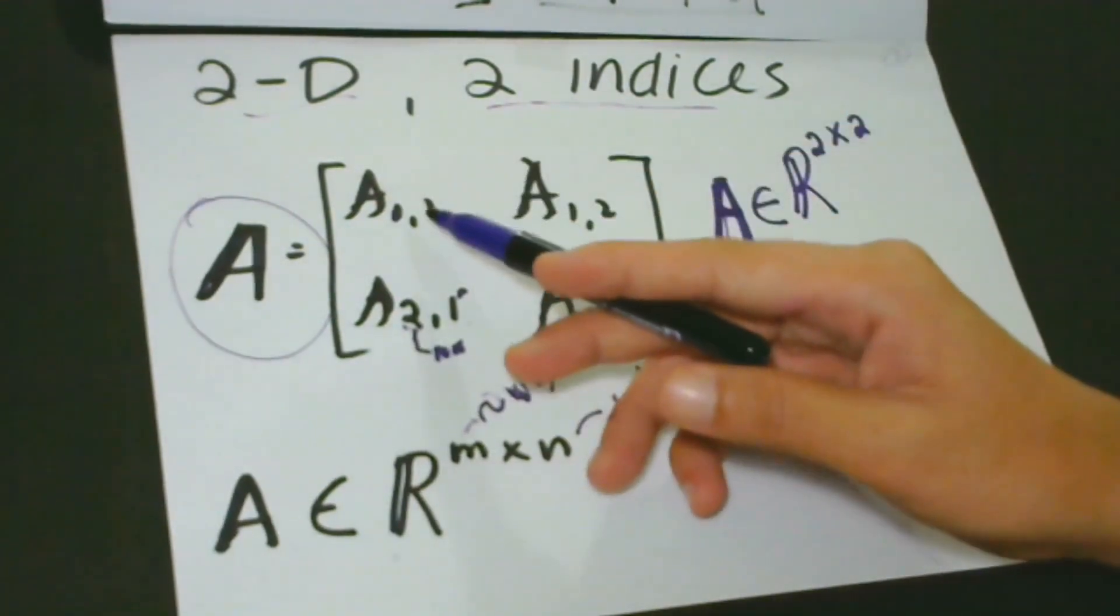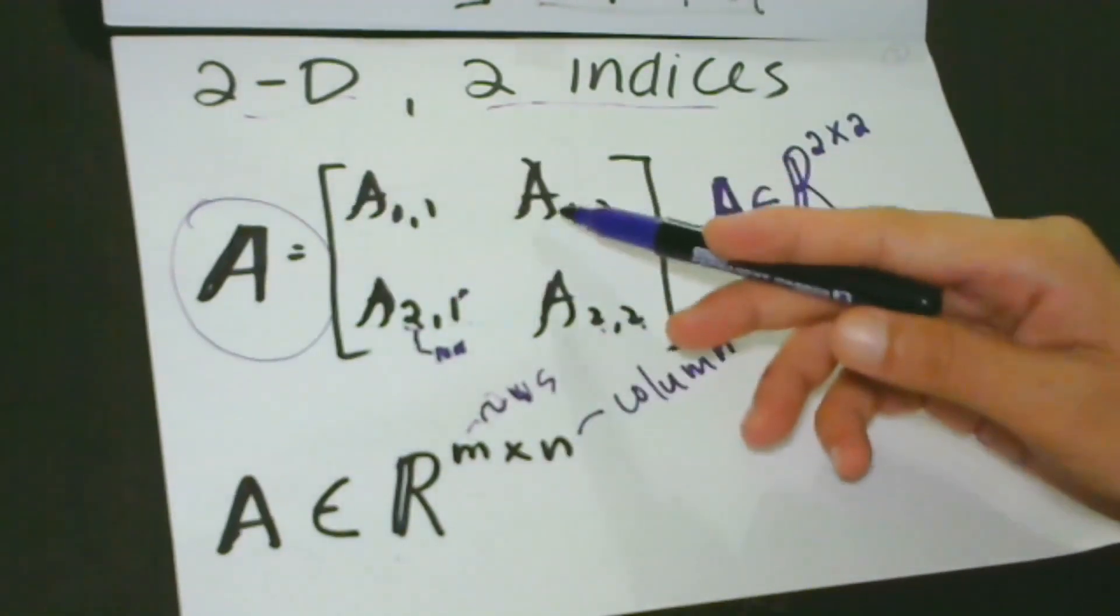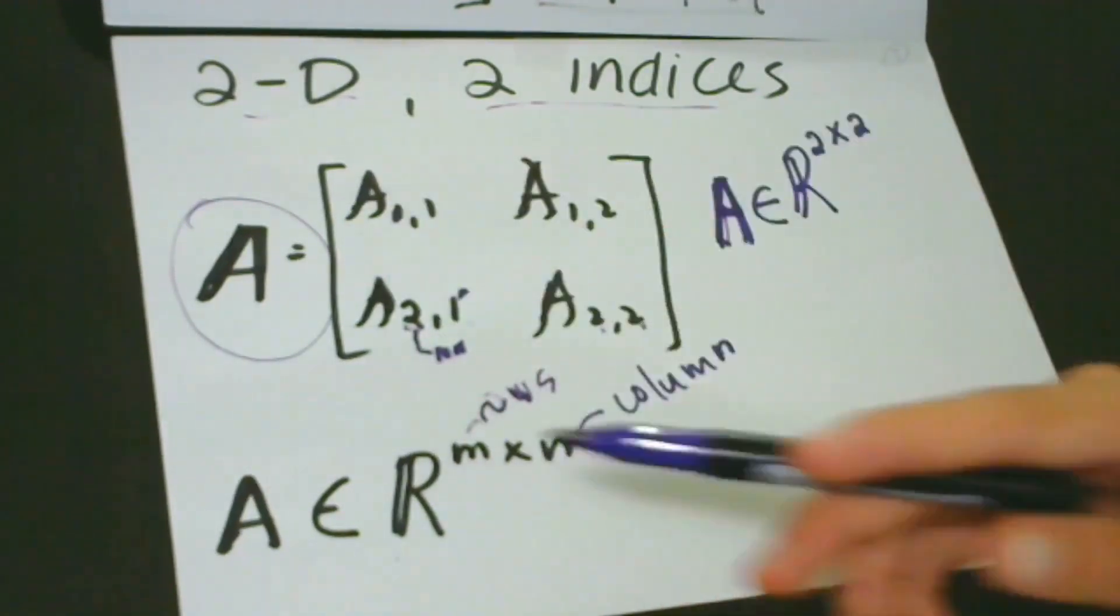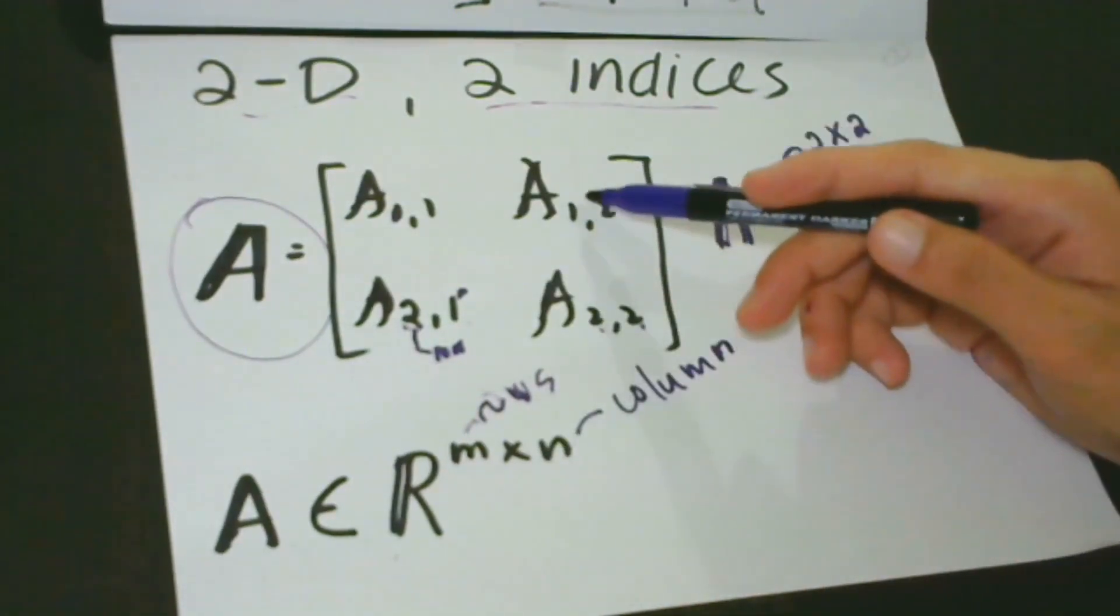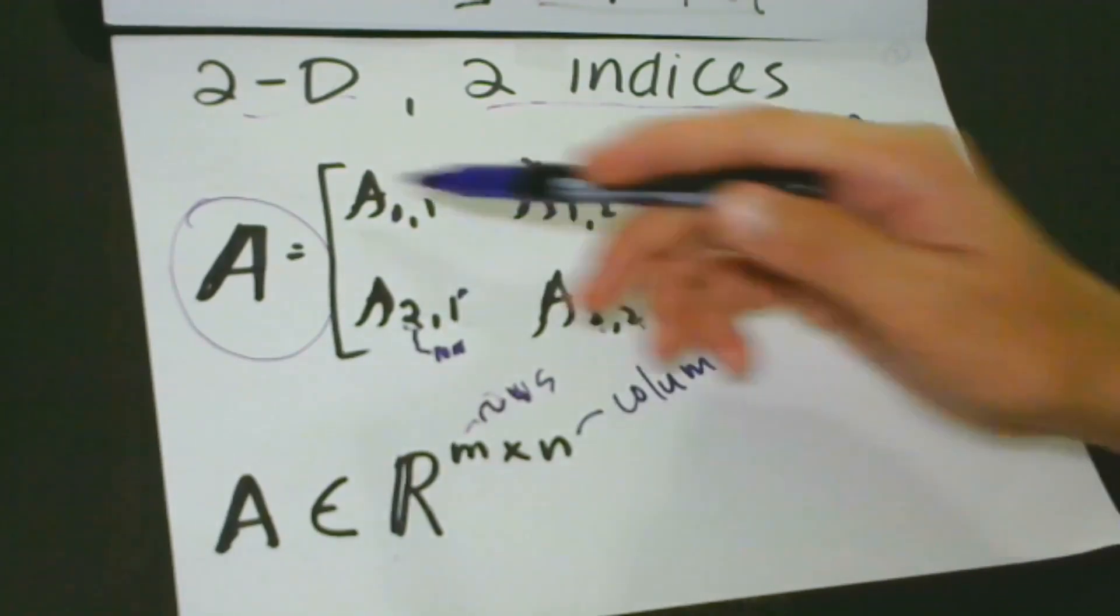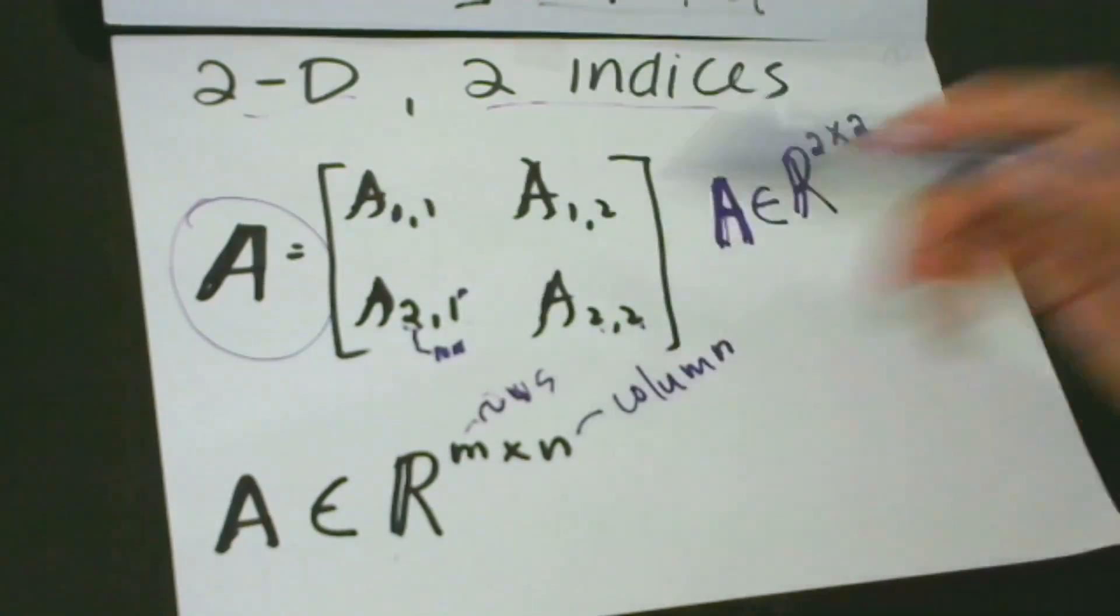A11 is very easy. It's the value in the first row, and in the first column. This is in the first row, and in the second column. It's very easy.